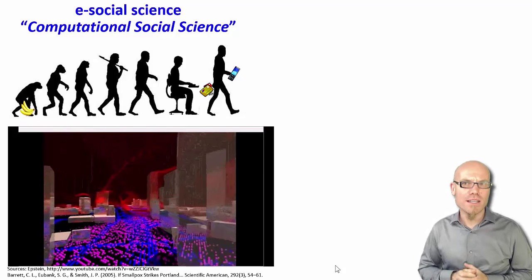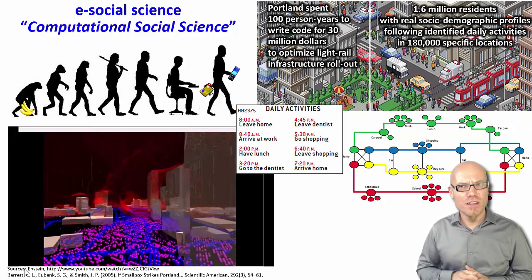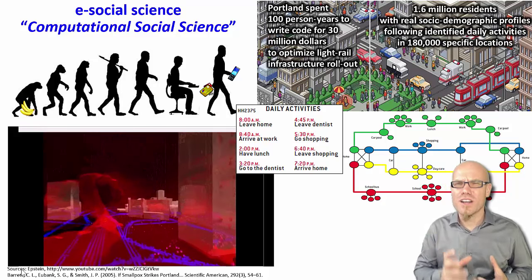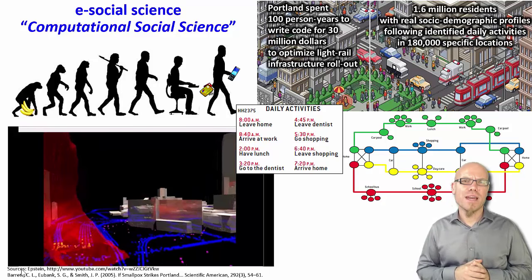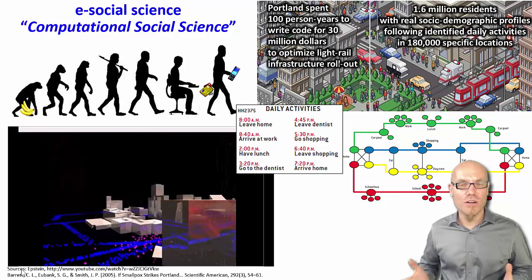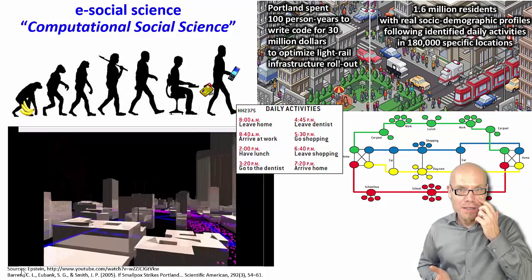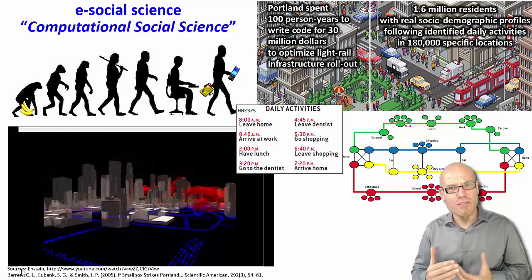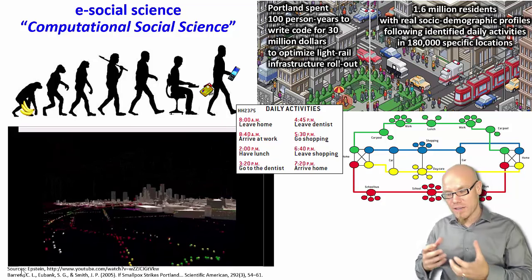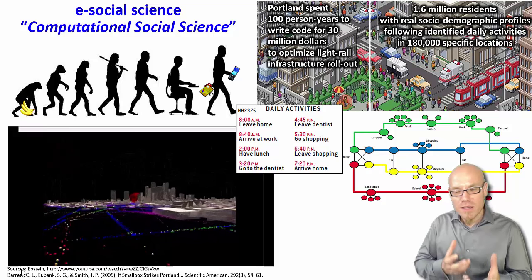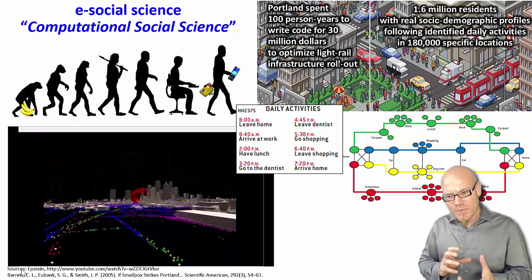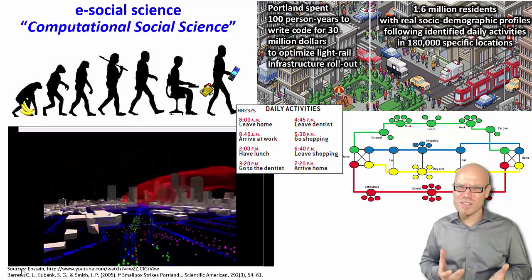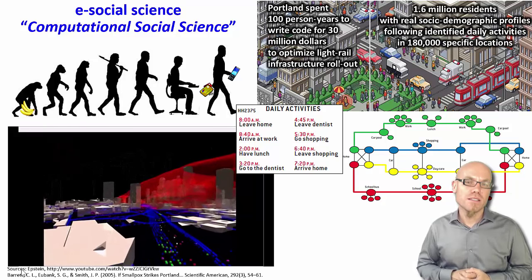Another famous example is from Portland. Portland spent a hundred person-years writing code — costing thirty million dollars — to optimize the light rail infrastructure rollout. That may seem like a lot, but it's not so much considering the expense of rolling out an infrastructure and the emerging phenomena it creates, such as changes in car traffic patterns, effects on employment, and companies setting up factories at different locations. These are extremely difficult to study with pen and paper; our intuition often leads us astray, so formal models and simulations are very useful.